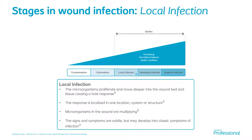We then move on to local infection — this is where we're starting to see some changes and need to think about ways to treat the bacteria. The microorganisms proliferate and move deeper into the wound bed tissues, starting to cause a host response. We might see localised infection signs such as erythema or increased exudate, and the microorganisms are starting to really multiply. This is where we need to get on top of it to stop it from deteriorating further.